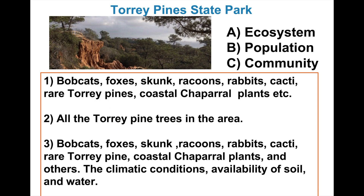Here's a question for you to ponder. Basically, the question asks you to match an item — ecosystem, population, or community, labeled by a letter — to the list indicated by numbers. Match each letter with a number.